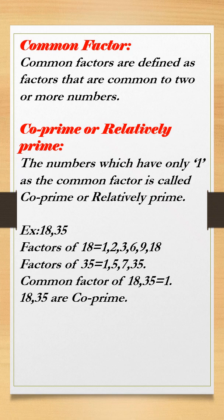Co-prime or relatively prime means that the common factor must be equal to 1. The numbers which have only 1 as the common factor are called co-primes or relatively prime. Here are some more important points about co-prime or relatively prime.